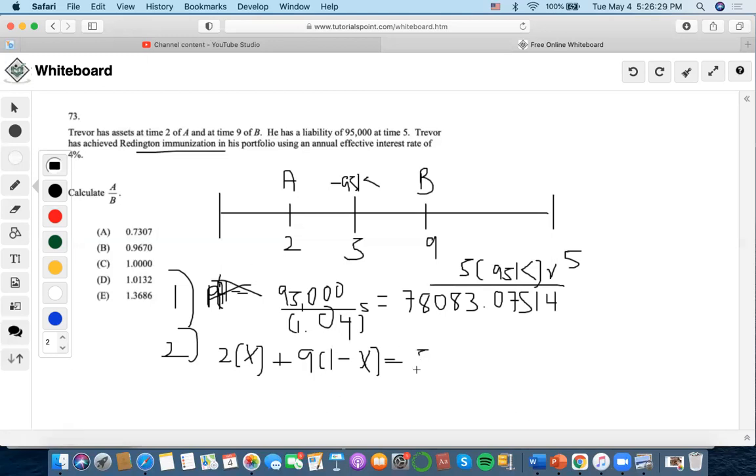And we're going to divide that by 78,083.07524. So we found out that the modified duration is 5 here. Now let's solve for x. So 2x plus 9 minus 9x equals 5. Let's bring this to the other side, negative 4, then negative 7x. So x equals 4 out of 7, which will consist of asset A. That means that asset B would consist of 3 sevenths.